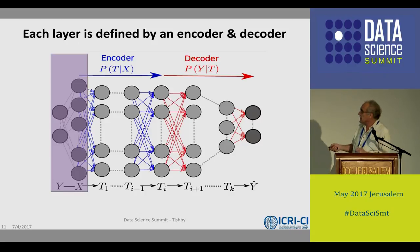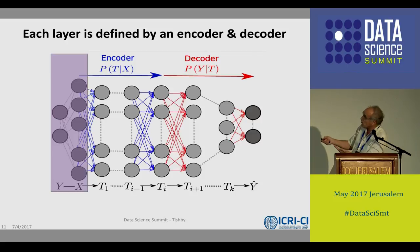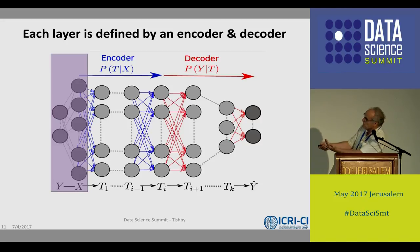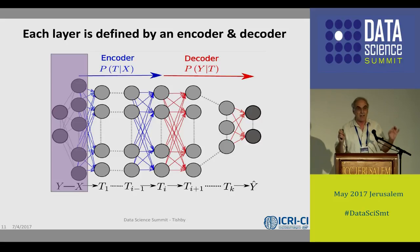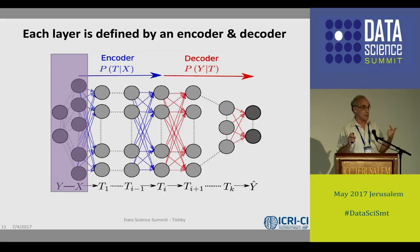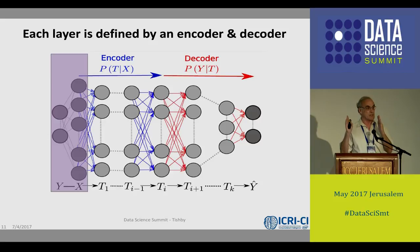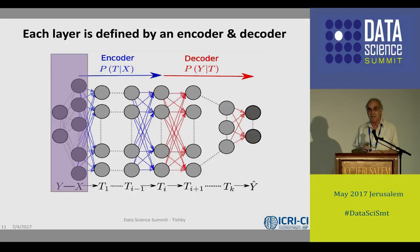Each hidden layer acts as an encoder — the map from the input — and a decoder — the map from T to the output. I argue that the only things that really matter, in terms of how much data you need to train the network and how accurate it will be, are the mutual information of the encoder and the mutual information of the decoder. These are what I call the information plane quantities — these two coordinates are the only thing I want you to look at.